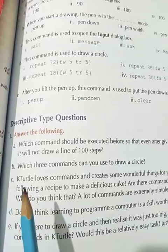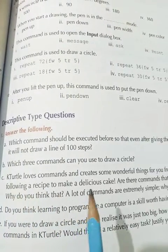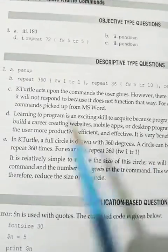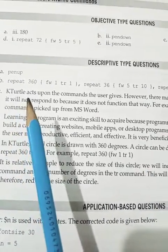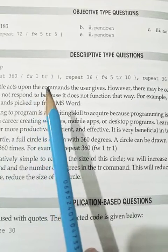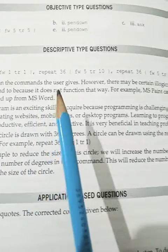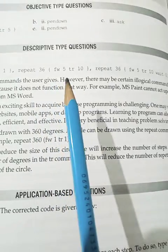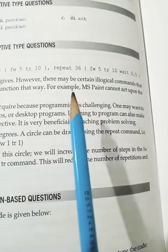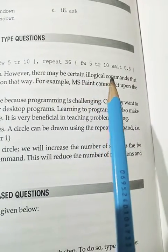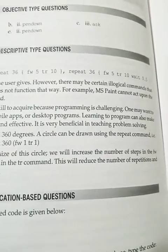Question number B: which three commands can you use to draw a circle? Answer B is: repeat 360 forward 1 TR 1. Second is: repeat 36 forward 5 TR 10. And the third is: repeat 36 forward 5 TR 10 wait 0.5.